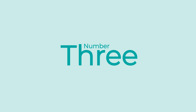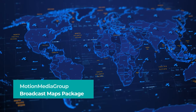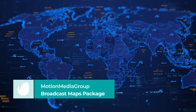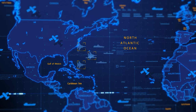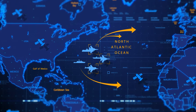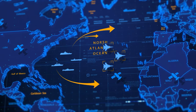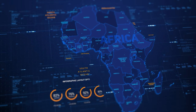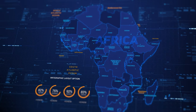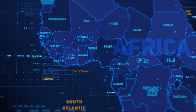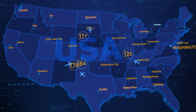Number 3. Broadcast Maps Package by Motion Media Group. This After Effects template contains over 370 elements ranging from digital map footage and titles to infographics and sci-fi HUD elements. The kit can be used to make travel animations, share the current weather, outline statistics, or even serve as a futuristic map for your film. Explore the possibilities by downloading this pack.